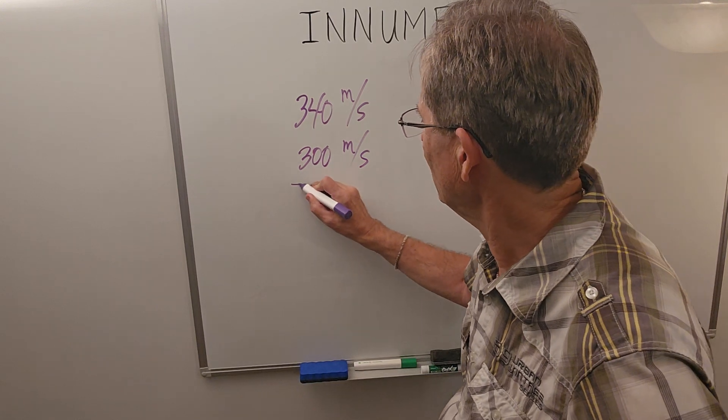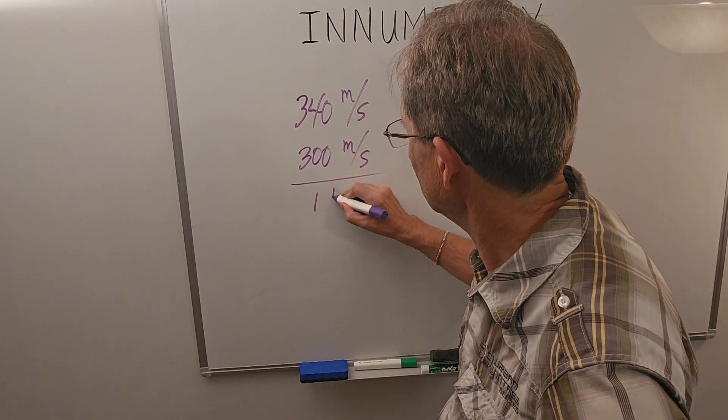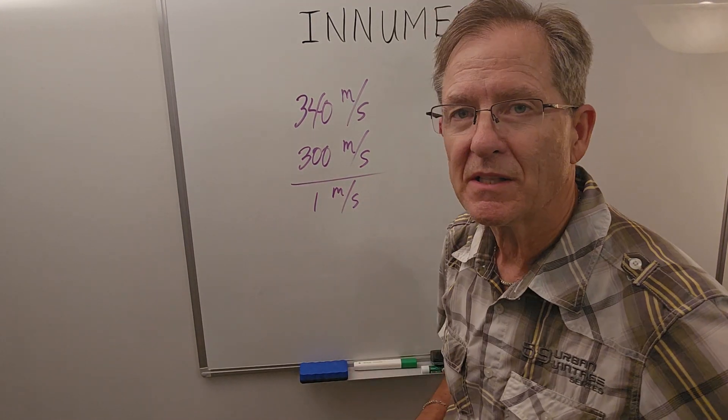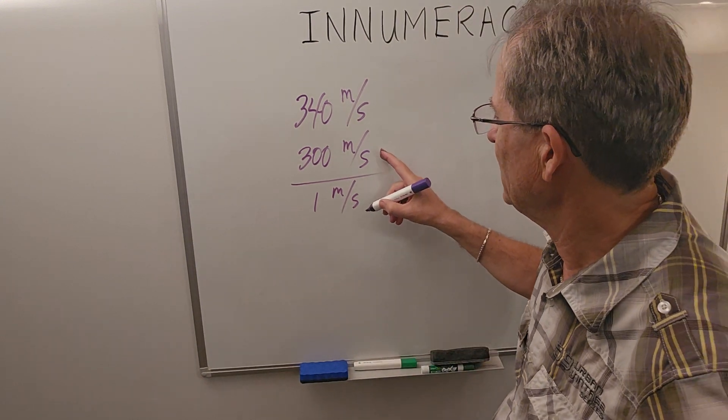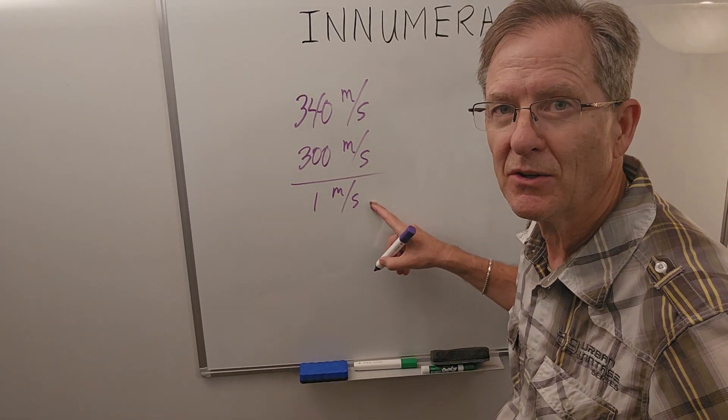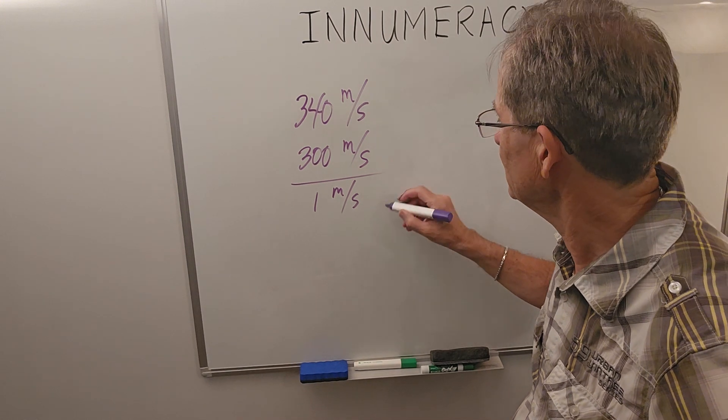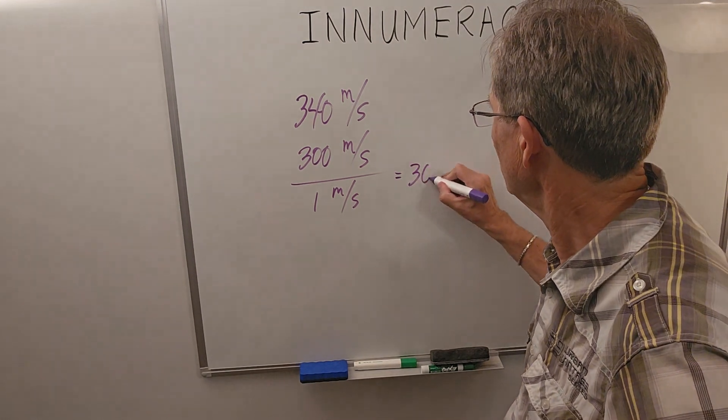And if you're out for a casual stroll, that could be as little as one meter per second. So, the ratio of the speed of the passenger jet to your speed when you're out for a bit of a walk is about 300.